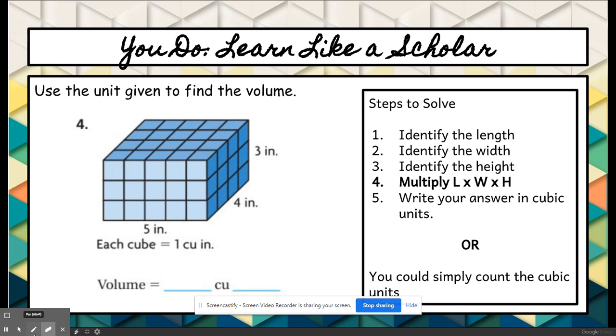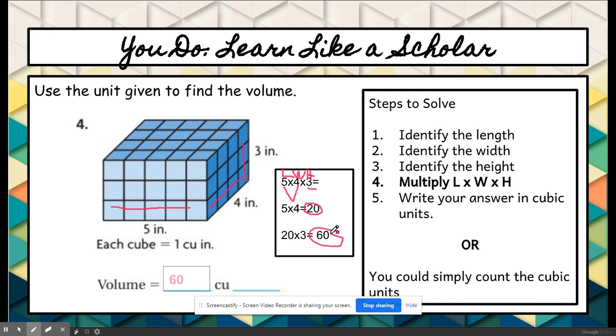Now I'd like for you to try this one on your own. Please pause here. I'm going to walk you through the problem to see if you were correct. You should have identified the length as 5, the width as 4, and the height as 3. Then you should have written out 5, which is the length, 4 which is the width, and 3 which is the height. I broke it down: 5 times 4 is 20, and 20 times 3 was 60. So you should have gotten 60 cubic inches. That's what it's being measured in. And that would be all there is to volume.